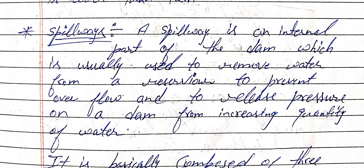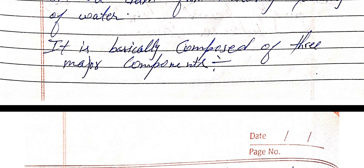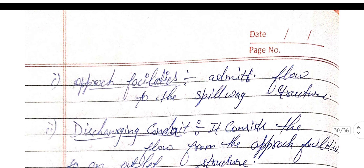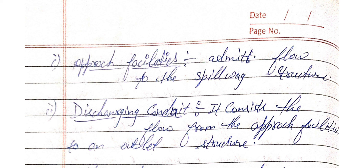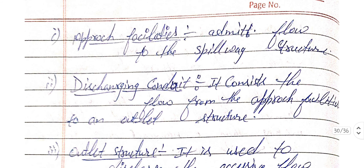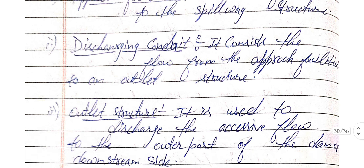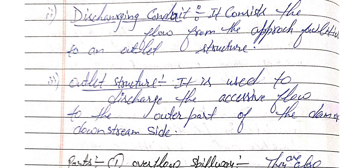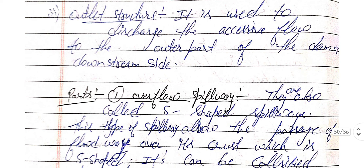The next topic is the spillway. A spillway is an integral part of the dam which is used to remove water from a reservoir to prevent overflow and to release pressure on a dam from an increasing quantity of water. It is composed of three major components: first, the approach facility, which admits flow to the spillway structure; second, the discharging conduit, which conveys flow from the approach facility to an outlet structure; and third, the outlet structure, which discharges excessive flow to the downstream side.